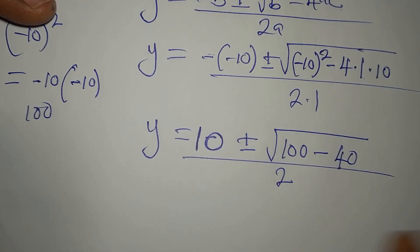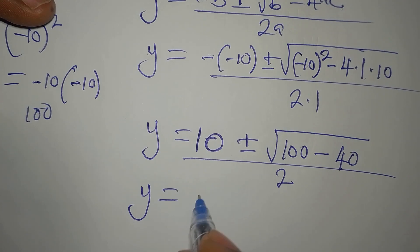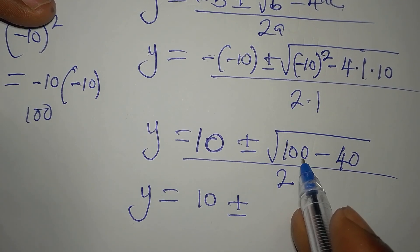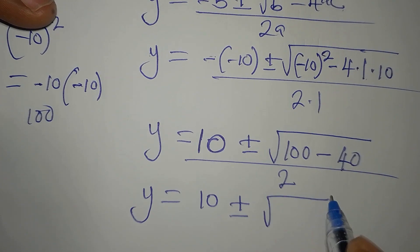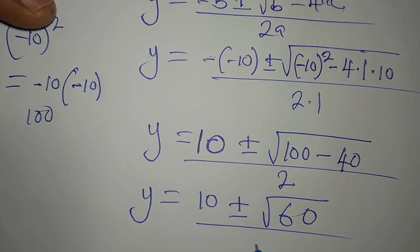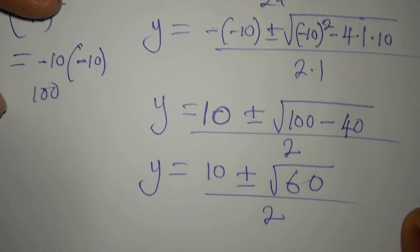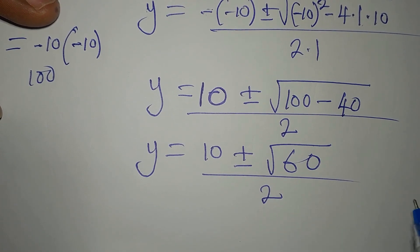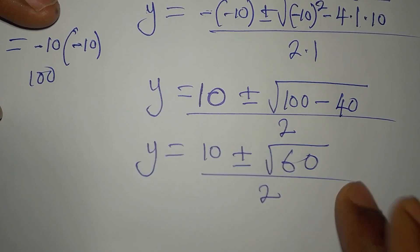Now, let us continue so that Y will be 10 plus or minus. This 100 minus 40 will give 60. Then, we divide by 2. So Y is 10 plus or minus. Now, if we continue, this 60 can be broken into a simpler form.